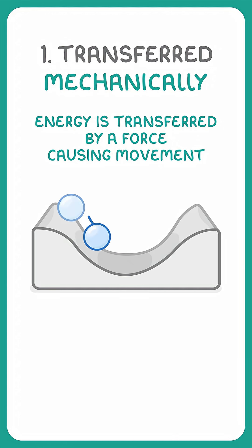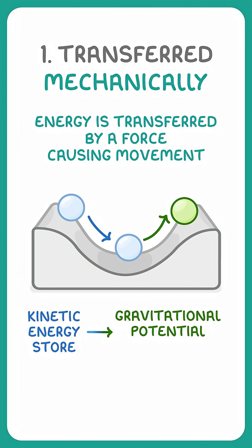For example, when a ball rolls down and then back up a ramp, energy is transferred from the kinetic energy store to the gravitational potential energy store.